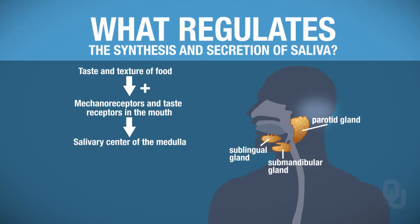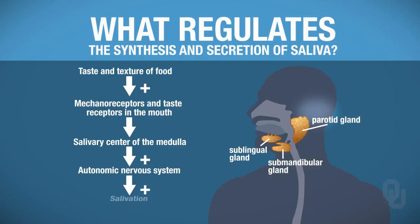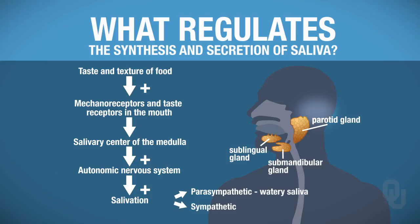The salivary center of the medulla is going to stimulate the autonomic nervous system, which then stimulates salivation. If you're having a parasympathetic response, your saliva is going to be watery. If you're having a sympathetic response, your saliva is going to be thick and very mucus-y.